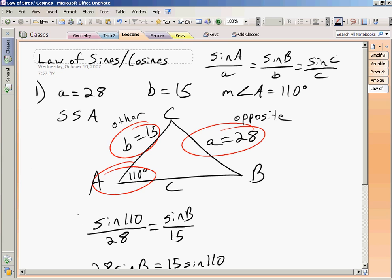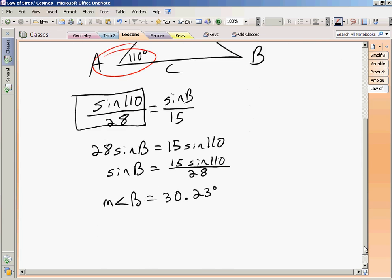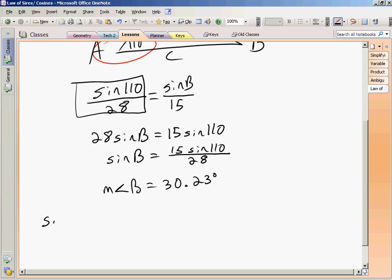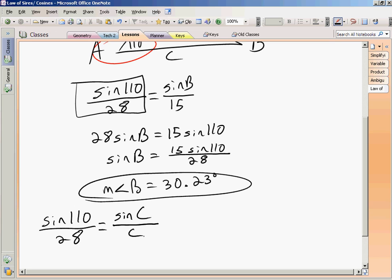Now remember what I said. This proportion is the one that I'm always going to be using. That ratio is always going to go into every proportion. So let's go back down here. Sine 110 over 28. Now I know everything for B. All that's left is C. So I have sine C over c.